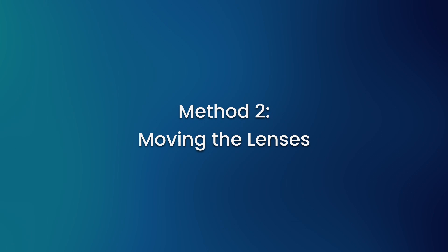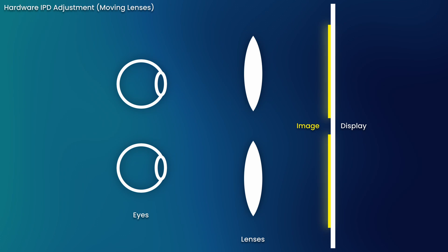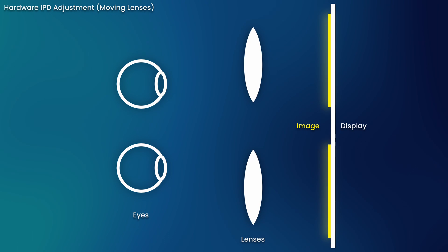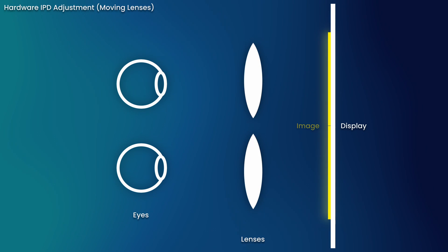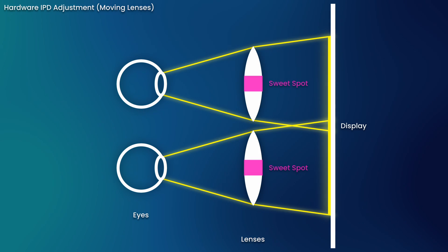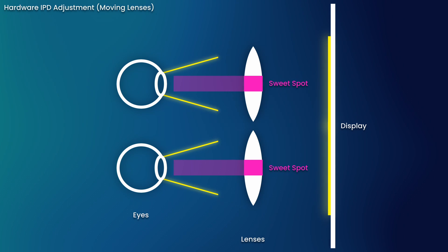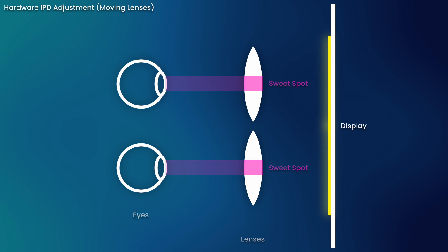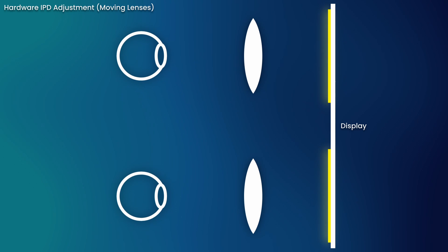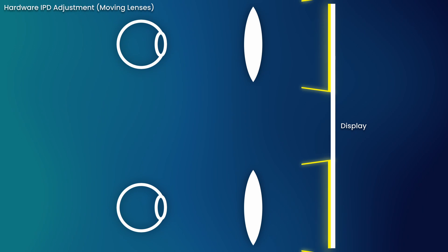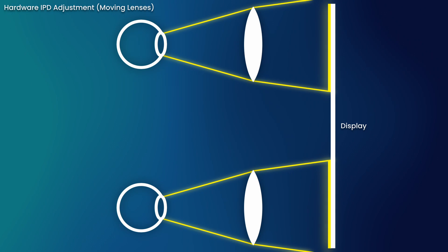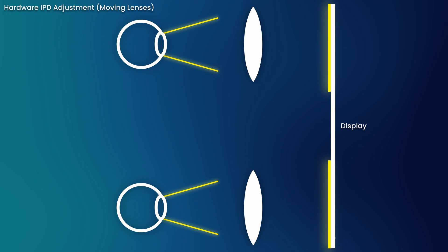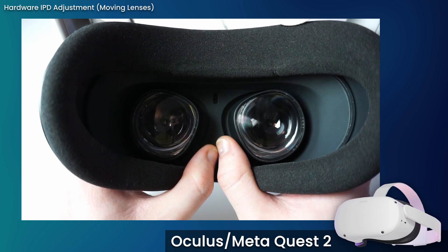Moving the lenses: this method involves using a mechanical adjustment system to move the headset's lenses apart or towards each other, usually accompanied by some software adjustment to the rendered image. This allows the lenses to stay aligned with the wearer's pupils, keeping the sweet spot in focus. But if your IPD is particularly wide, you might find that the headset actually runs out of display space as you move the lenses very far apart. This is the system found on headsets like the Quest 2.